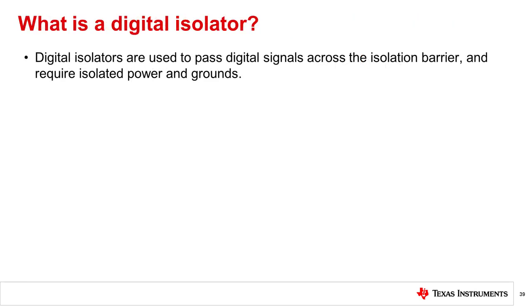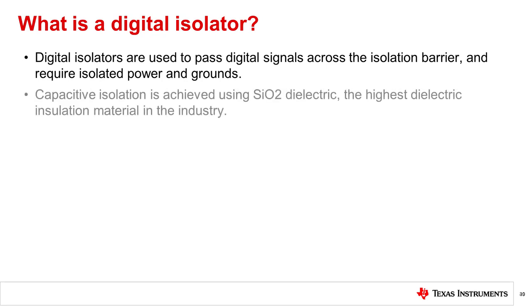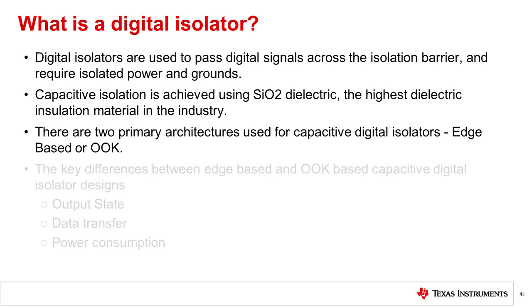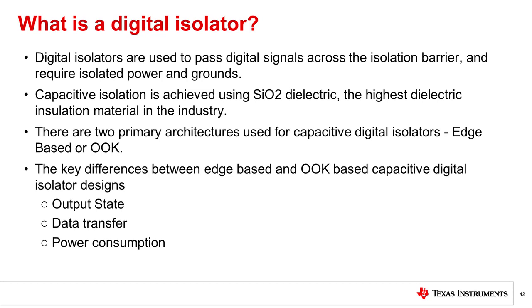This completes our introduction to digital isolators. We discussed that digital isolators are used to pass digital signals across the isolation barrier and require isolated power and grounds. Capacitive isolation is achieved using silicon dioxide dielectric — the highest dielectric insulation material in the industry. There are two primary architectures used for capacitive digital isolators: edge-based or OOK. Both edge- and OOK-based digital isolation solutions have a predefined default output high and low state found in the device datasheet.